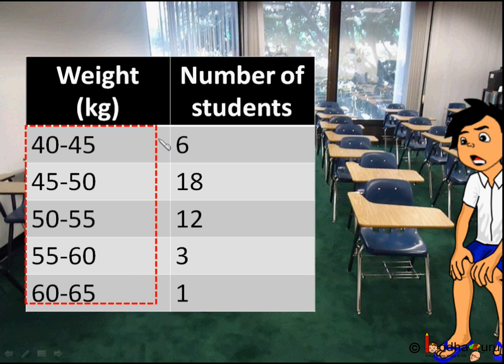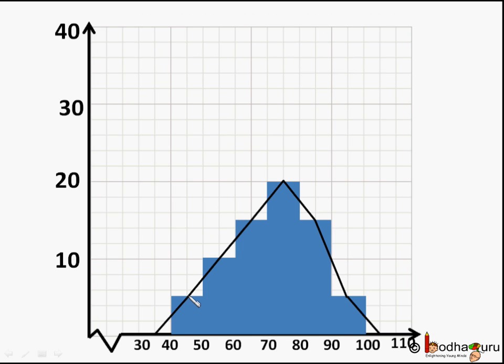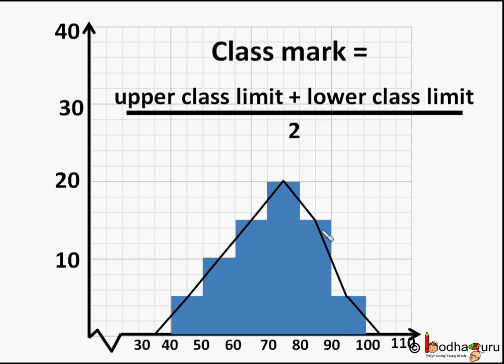For each class interval, we will take a point which would serve as representative of the whole class. It is assumed that the frequency of each class interval is centered around its midpoint. So the midpoint or class mark of each class can be chosen to represent the observations falling in that class.